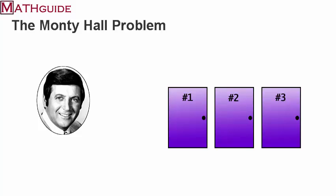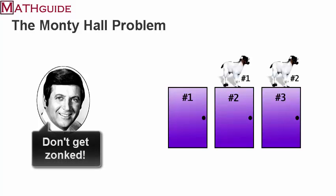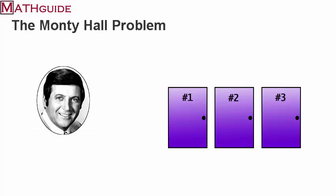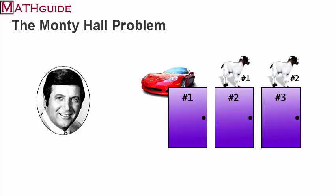Behind the other two doors there were not-so-great prizes — let's just call them goats, something no one wanted, and it usually was a goat. Sad little goats would be the prize you'd get if you chose the wrong door. So if that was the way the game went, it would be pretty simple: there's one car, there's two bad gifts, and you have to pick the right door.